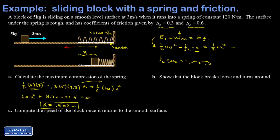The big picture summary: I had a bunch of energy in the motion of the block, it ran into the spring, some energy was permanently deleted by friction as the spring compressed, and the rest is stored in the spring. Now Part B: show that the block breaks loose and turns around.